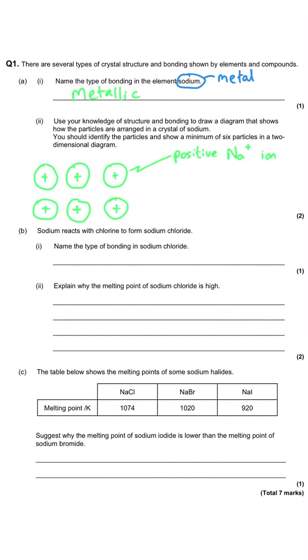In the centre of the ion you can write a plus to show that it is a positive ion or you could write Na+, either way is fine. In this question there's no mark for showing the delocalised electrons that move through the structure but you can put them in and won't be penalized. One mark for showing the regular arrangement of sodium ions and the second mark is for indicating they are positively charged.